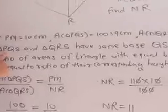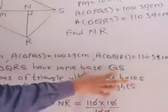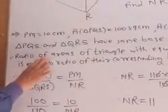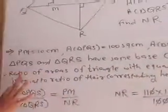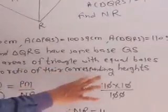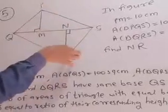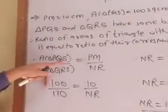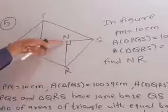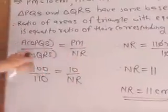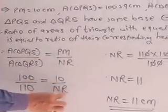Given that triangle PQS and triangle QRS have the same base QS. Therefore, ratio of areas of triangles with equal bases is equal to ratio of their corresponding heights. Because base is the same, ratio of their areas equals ratio of their corresponding heights. So area of triangle PQS upon area of triangle QRS equals height PM upon RN.